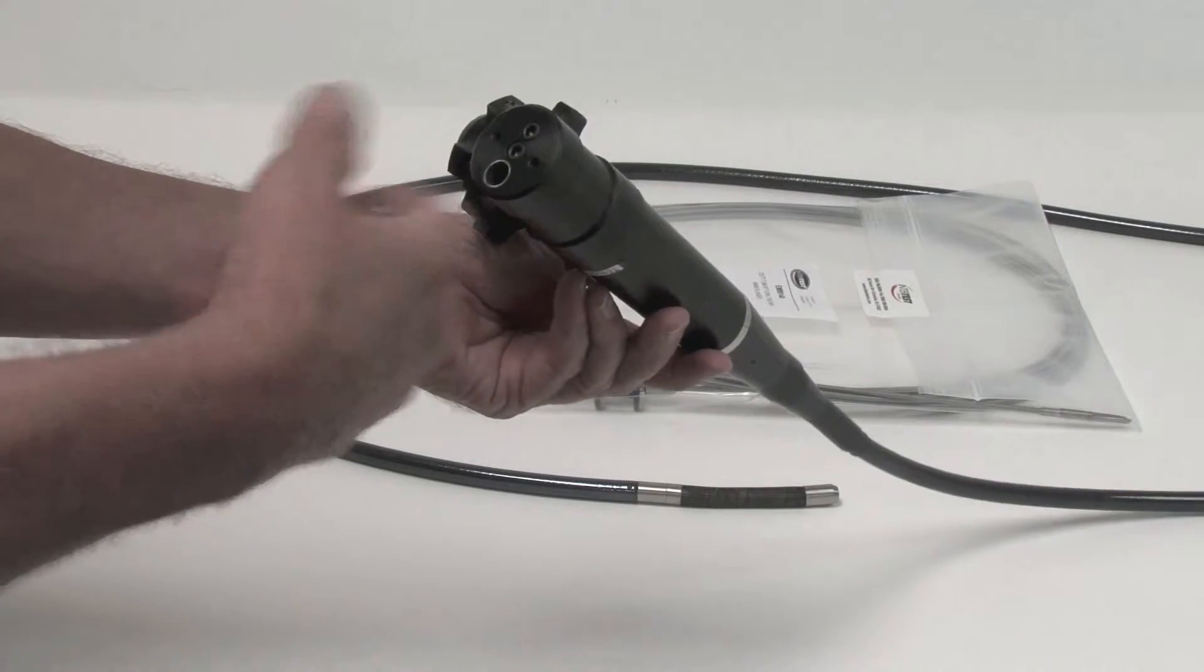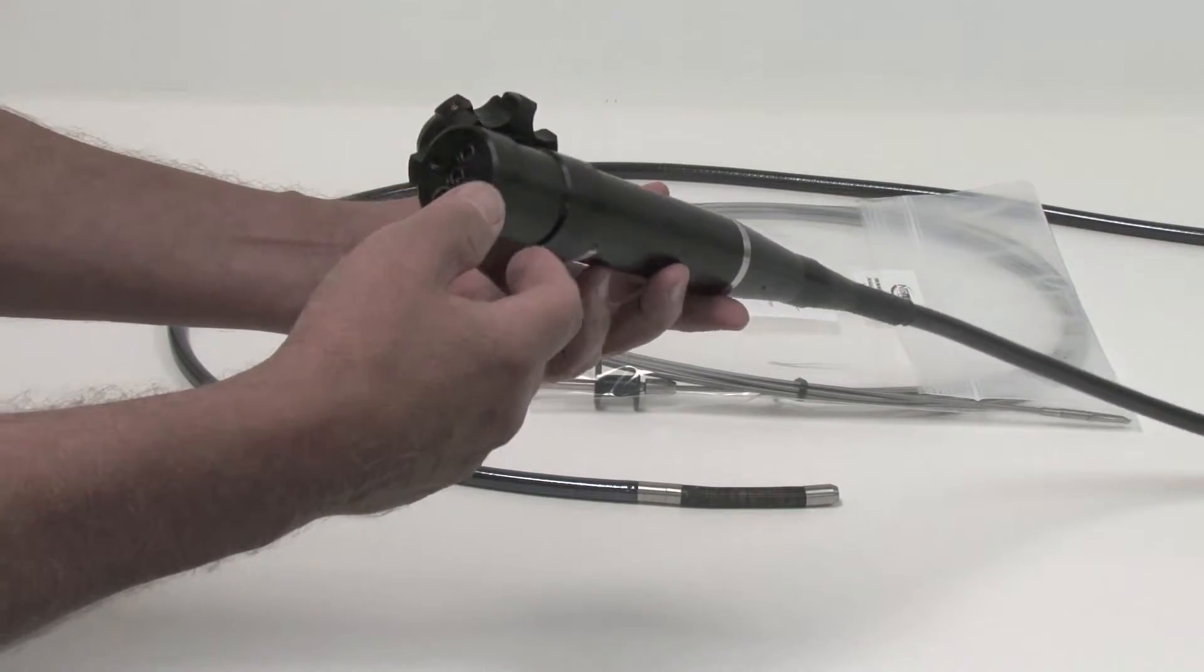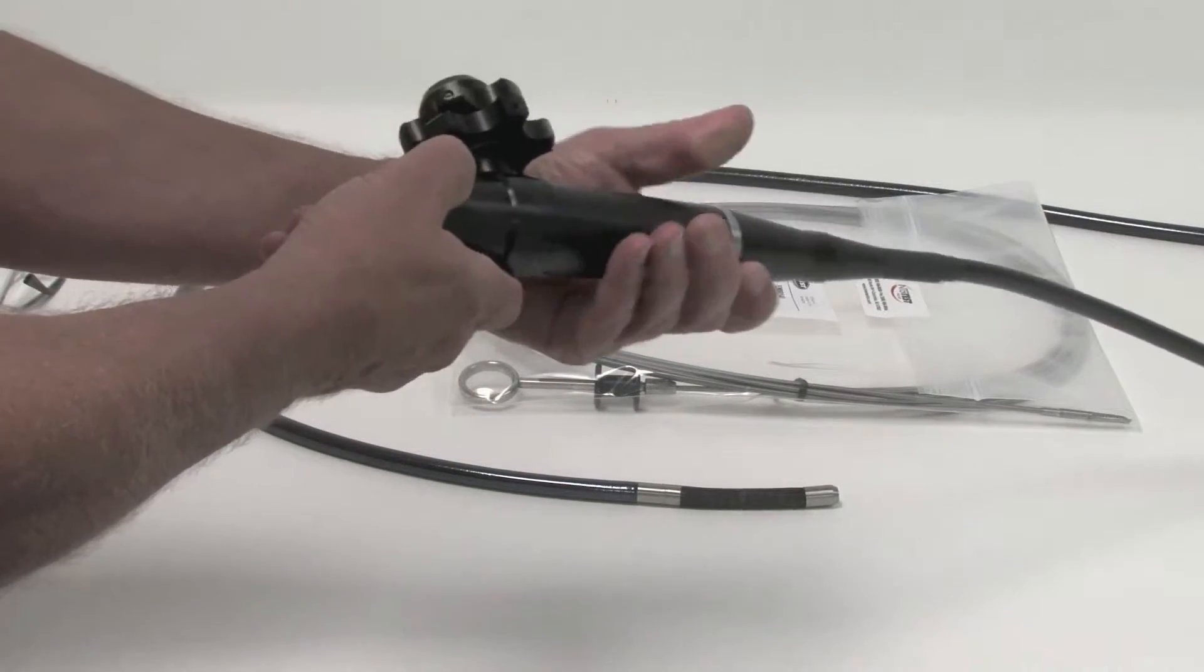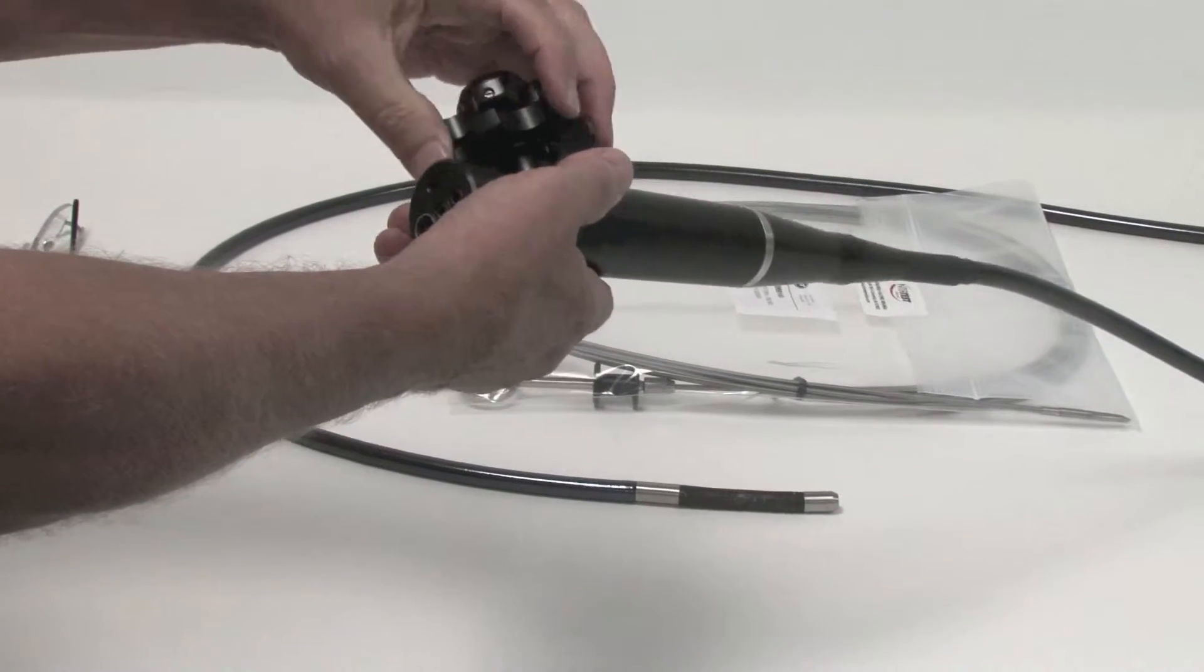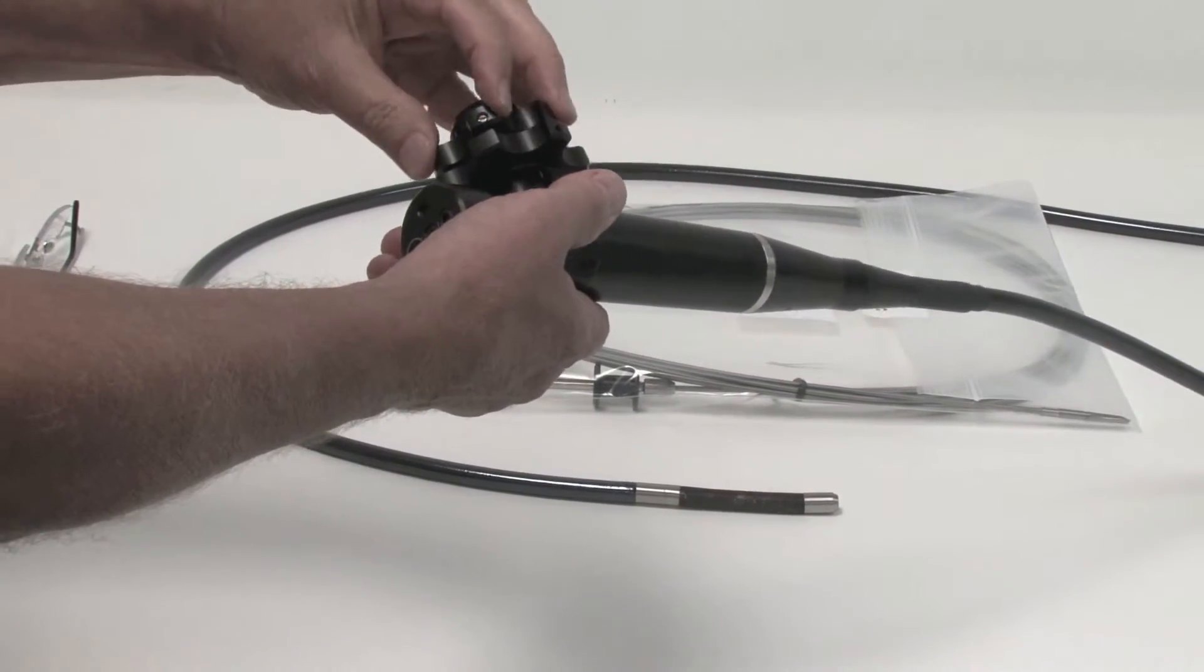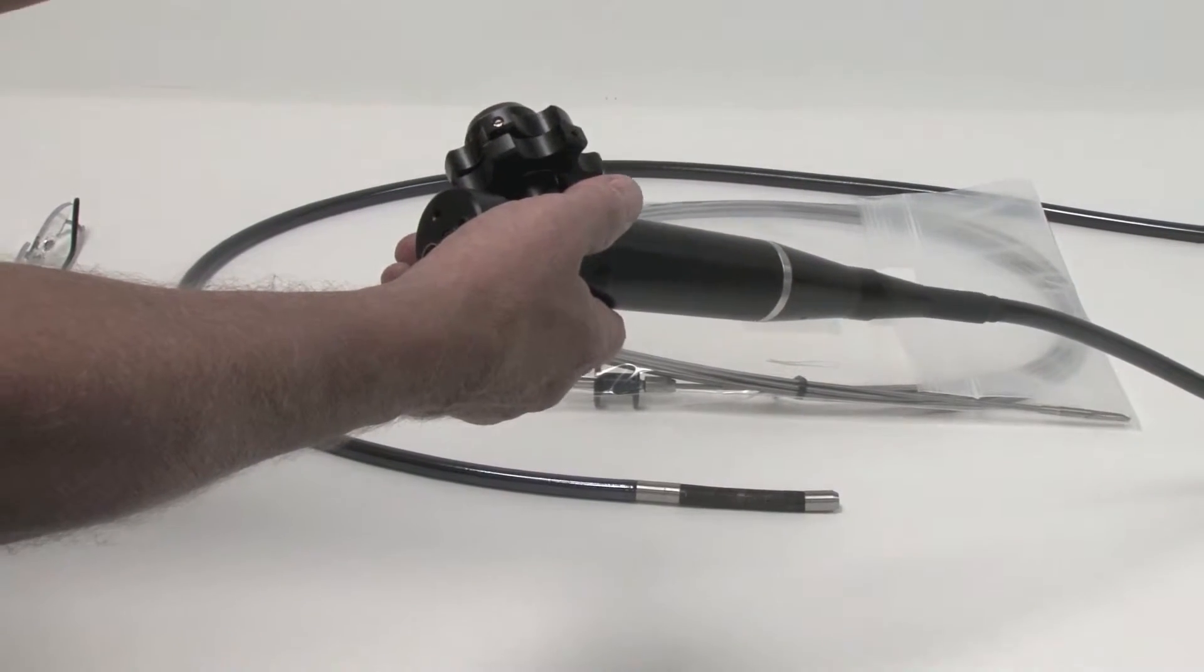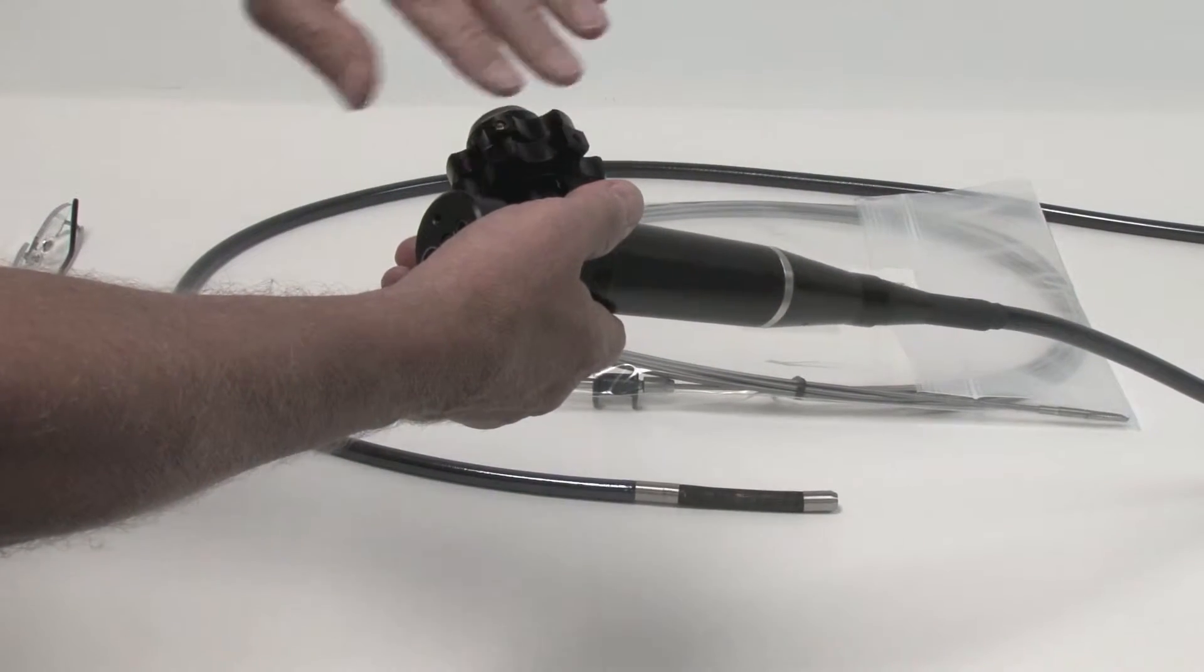To familiarize ourselves with the terminology, this section is the handset. We have two control knobs. This guide tube has four-way articulation. Each knob will run 90 degrees in one of two directions in opposite planes.